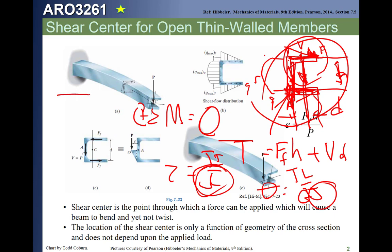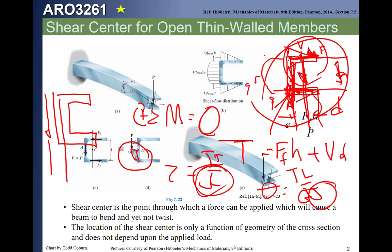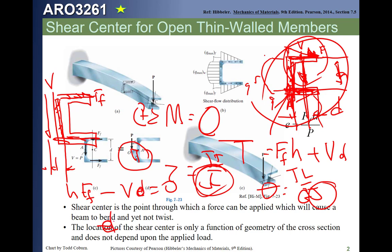If, however, we had that same section and loaded it out here — by putting a little welded piece on the part — then our reactive shear flows go through the middle of each flange, and the shear forces in each flange are like this. When we sum our forces, FF times H minus V times E equals zero, and we can find this location D — the shear center, and we usually use the symbol E for it.